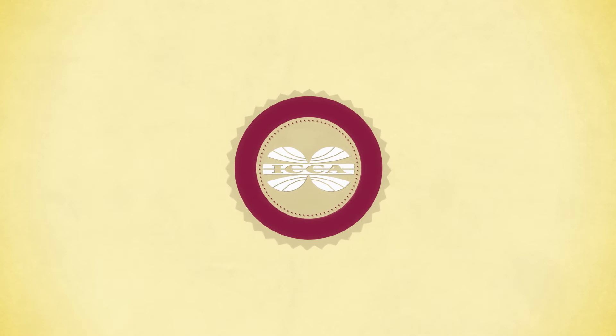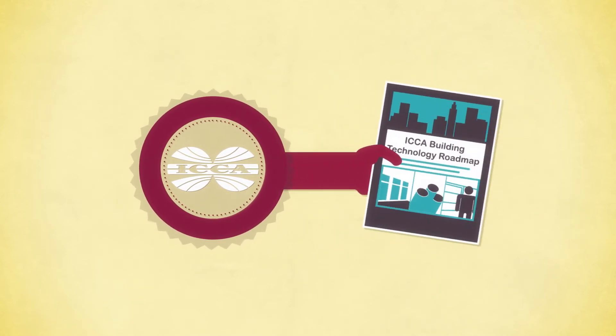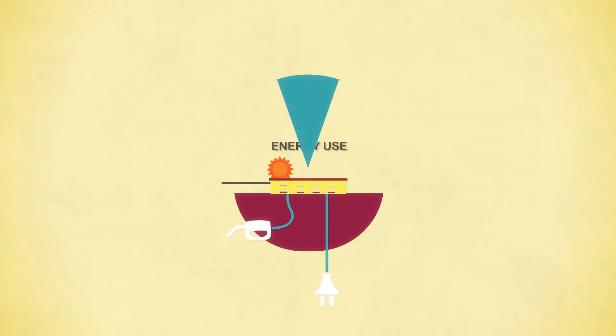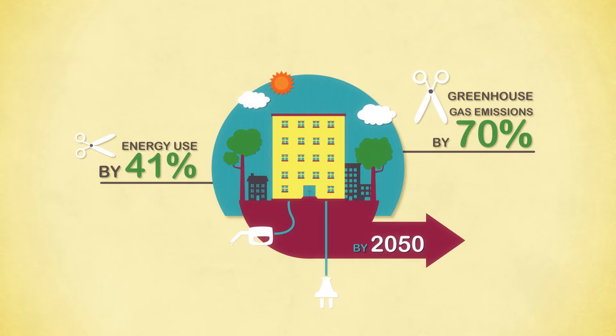The ICCA, the voice of the global chemical industry, in its Buildings Technology Roadmap estimates that combining ambitious energy improvements with lower carbon fuels and electricity use could cut energy use by 41% and greenhouse gas emissions by 70% by 2050.